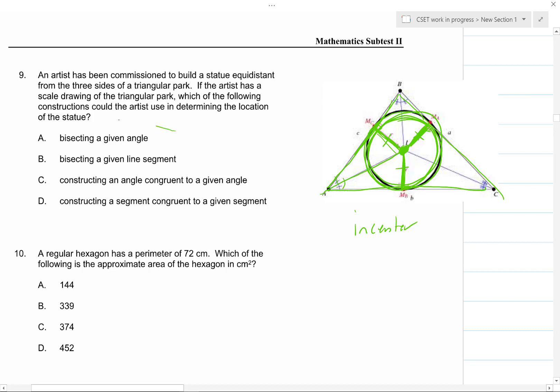So bisecting a given angle. So if you bisected each angle, let me get rid of all this stuff, so if you took this angle and cut it in half, you took this angle and cut it in half, you took this angle and cut it in half, the point where they all meet is the in-center.